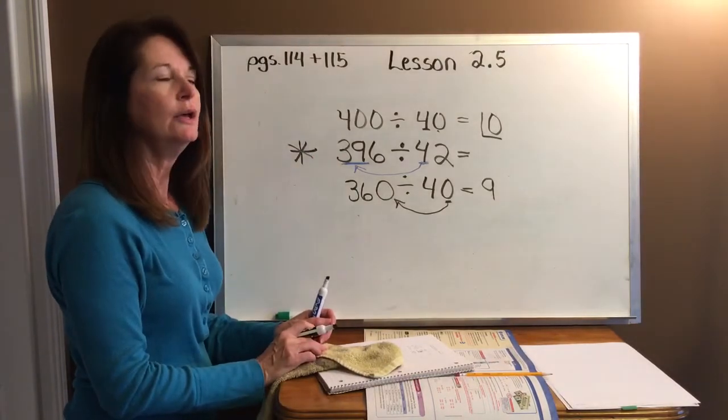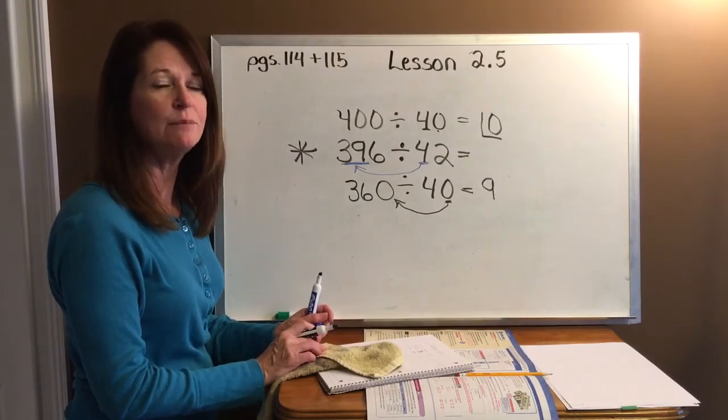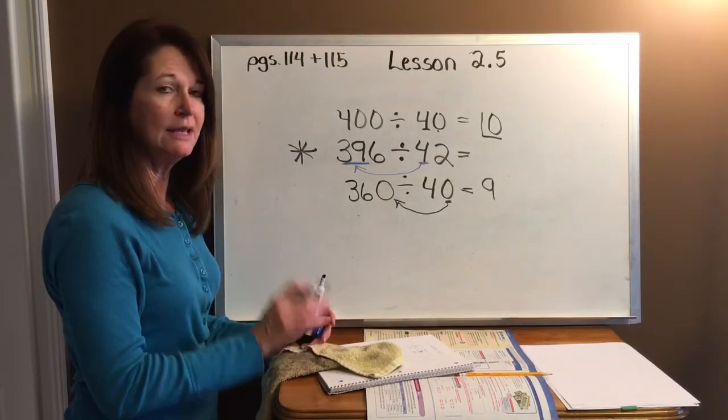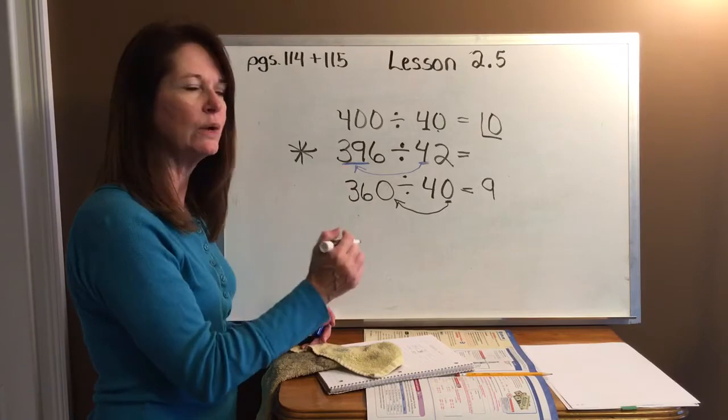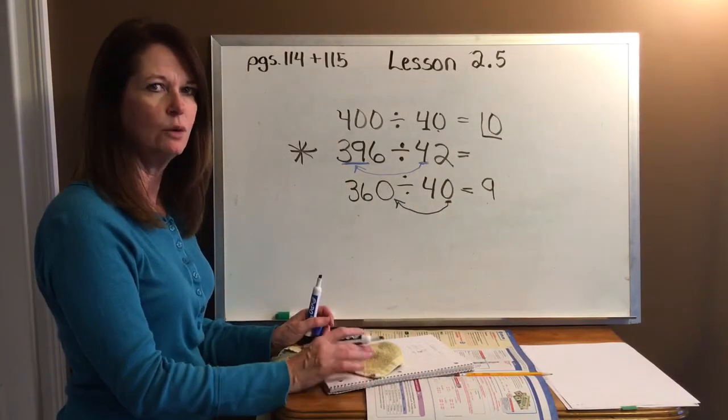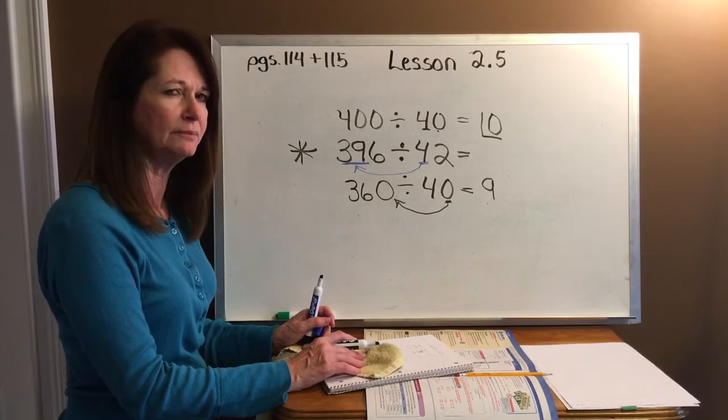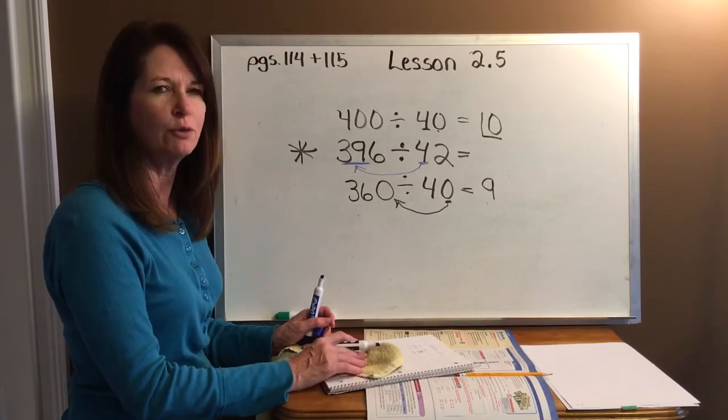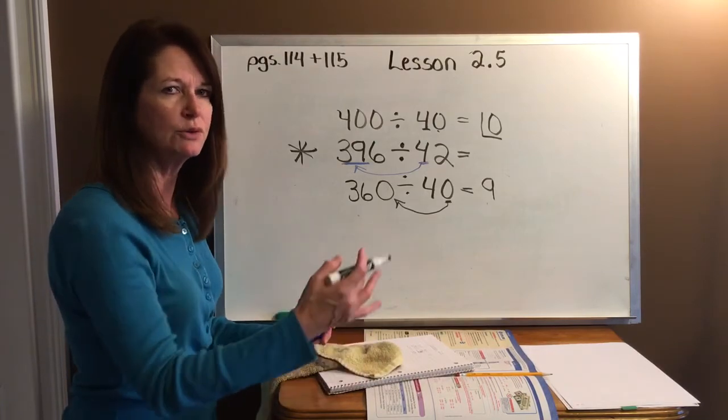the answer to this problem, 396 divided by 42, the answer will be somewhere between 9 and 10. The whole number 9 or the whole number 10. Somewhere in between there. Which means you're going to have a remainder or go to decimals.